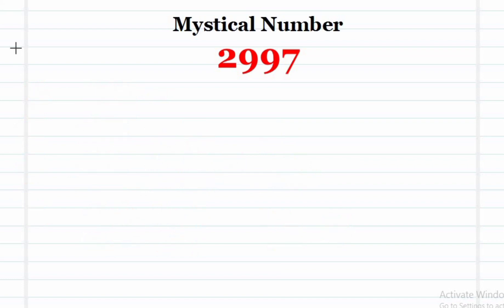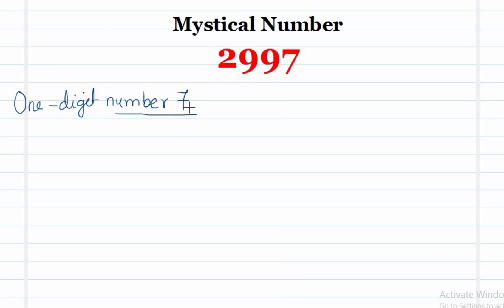As an example, consider the single digit number 7. There is only one digit, so first we compute 7 into 111, which is equal to 777.